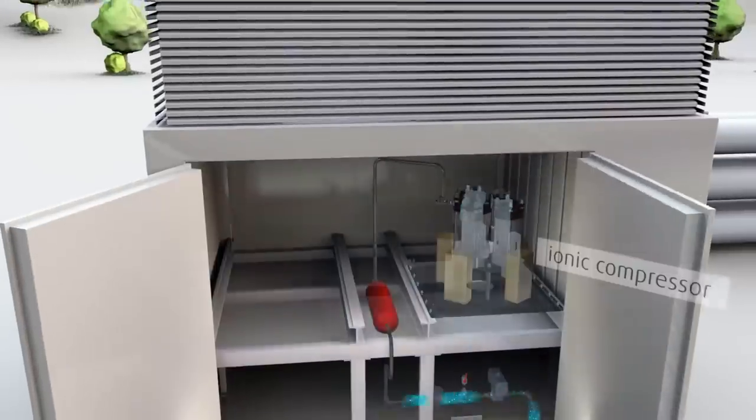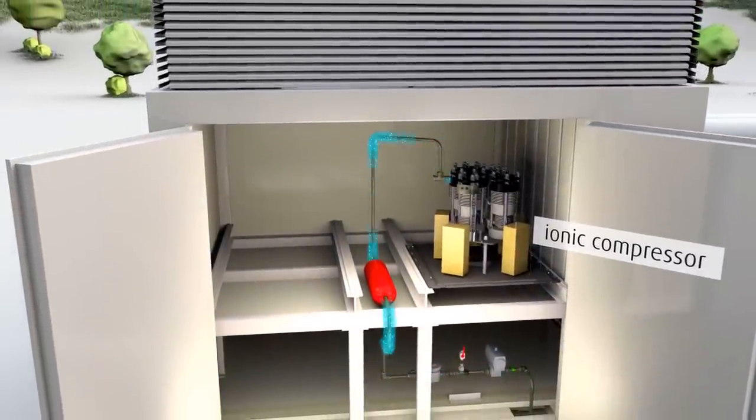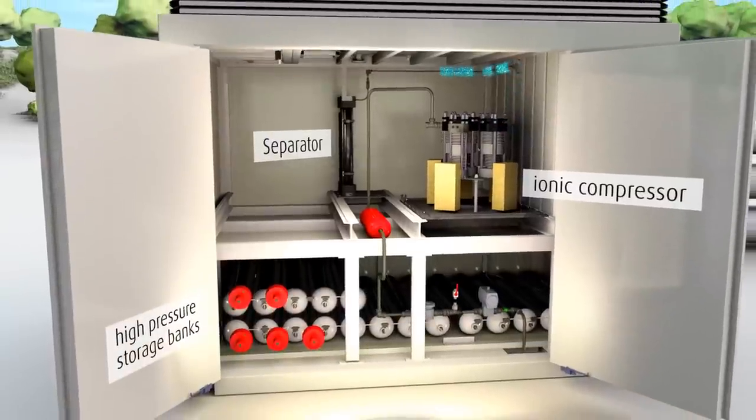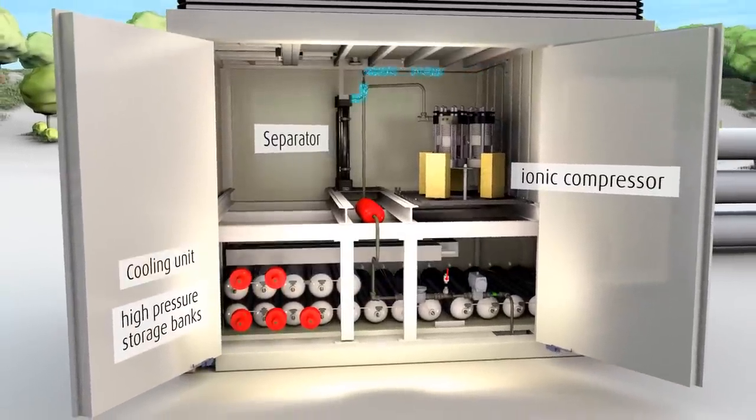The main modules of the compressor station are the ionic compressor together with the downstream separators, as well as the high pressure storage banks and finally the cooling unit. All the modules are housed in a 14-foot container.